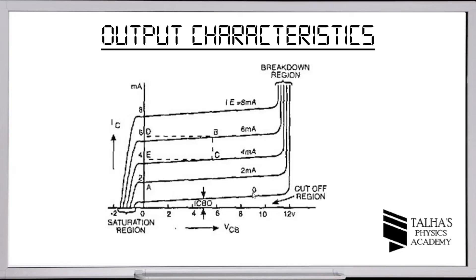The emitter current is kept at 0, then 2mA, 4mA, 6mA, and 8mA. The graph plots collector-base voltage on the x-axis and collector current IC on the y-axis. Different regions are visible in the output characteristics, which will be explained.